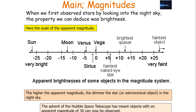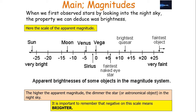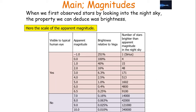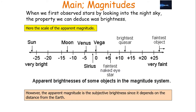The Hubble Space Telescope has meant objects with apparent magnitudes of 30 can now be observed, and it is important to remember that negative on this scale means brighter. Care must be taken when comparing magnitudes — does a bigger magnitude mean brighter or dimmer? It is safer to talk about brighter or dimmer magnitudes rather than larger or smaller numbers. Here is a scale of apparent magnitude so you can see the difference in brightness relative between each star.